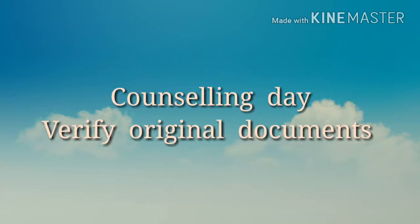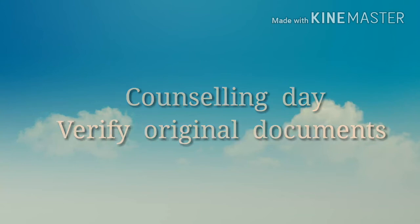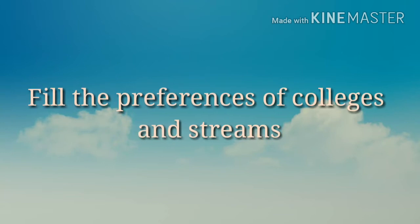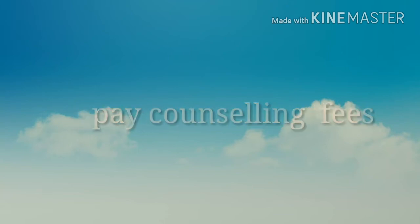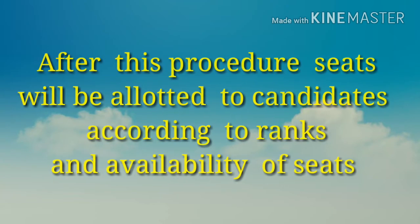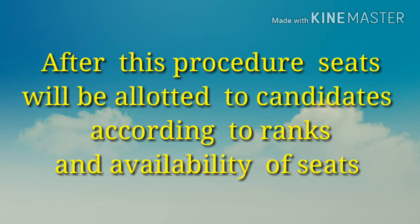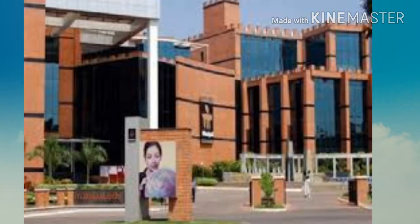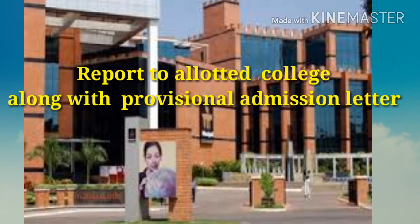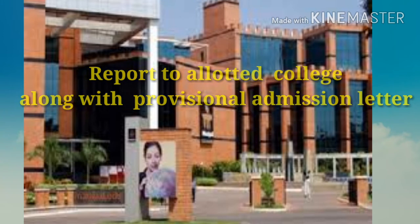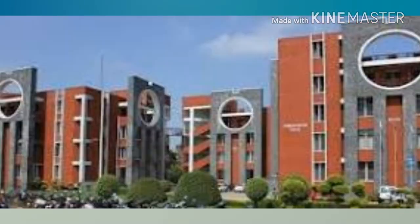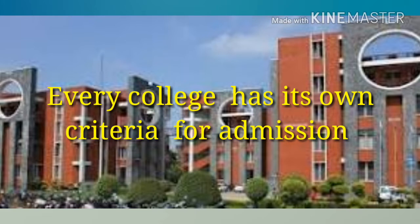On the day of counseling, candidates have to verify their original documents, fill the preferences of colleges and streams, and pay the counseling fees. After these procedures, the seats will be allotted to the candidates on the basis of their ranks and availability of seats. Candidates have to report to the allotted college along with the provisional admission letter to get final admission.